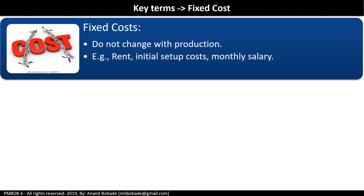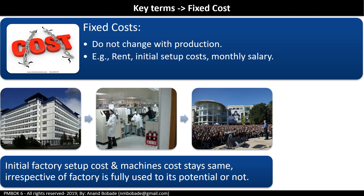Fixed cost does not change with production — for example, rent, initial setup cost, or monthly salary. Consider setting up a mobile manufacturing factory with a target capacity of 1,000 mobiles per day. You will incur the overall factory setup cost and machine cost upfront. This initial setup cost stays the same — or fixed — whether the factory is fully utilized at 1,000 mobiles per day or only producing 500 mobiles per day.